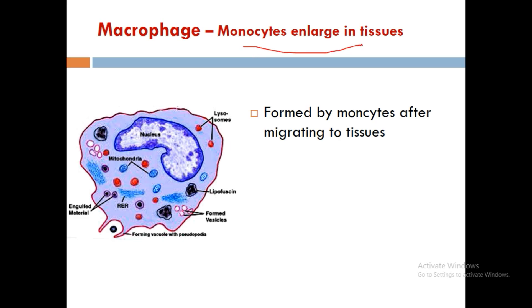Macrophages are formed by monocytes after migrating to the tissue. When monocytes are circulating in the blood, they are still called monocytes. But once they exit the blood vessel and enter different types of tissue, they are known as macrophages. Upon conversion to macrophages, their size increases.